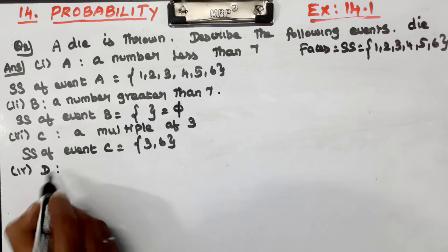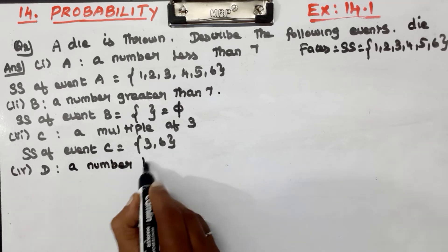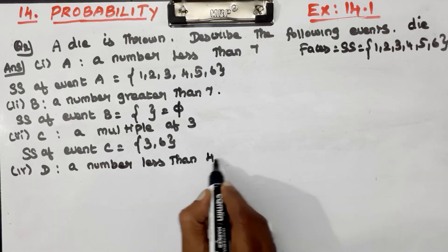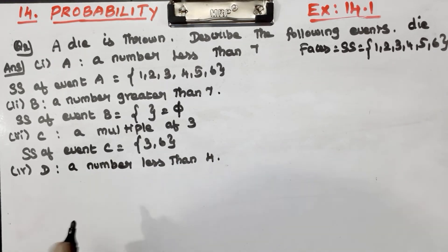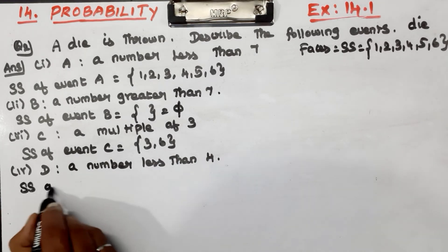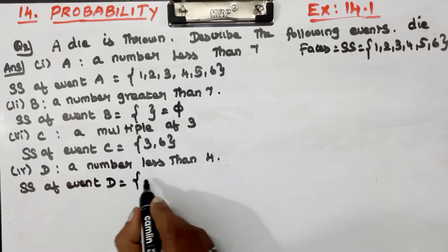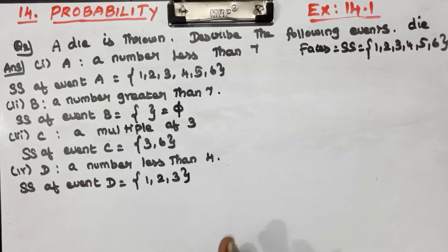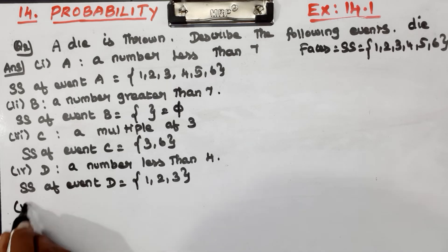Event D: numbers less than 4. The sample space of event D, numbers less than 4, is 1, 2, and 3.